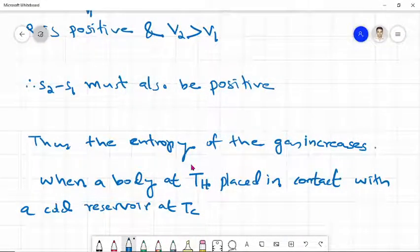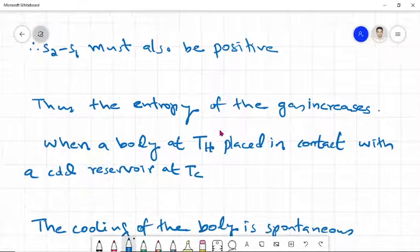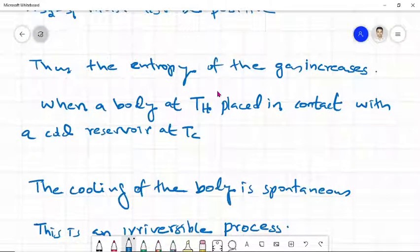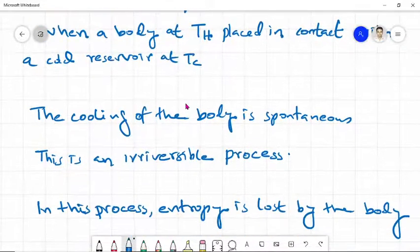When a body at temperature TH is placed in contact with a cold reservoir at TC, heat flows from the hot body to the cold body. The cooling of the body is spontaneous. This is an irreversible process.